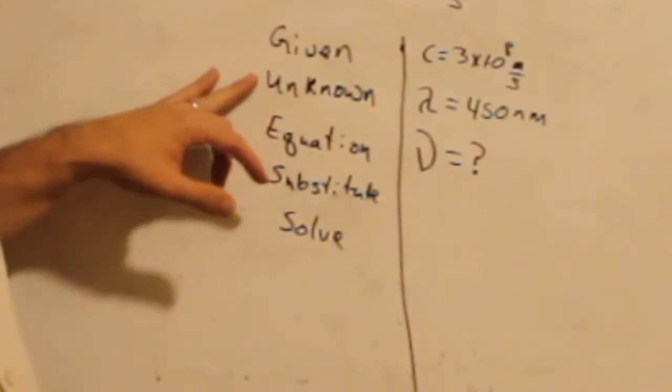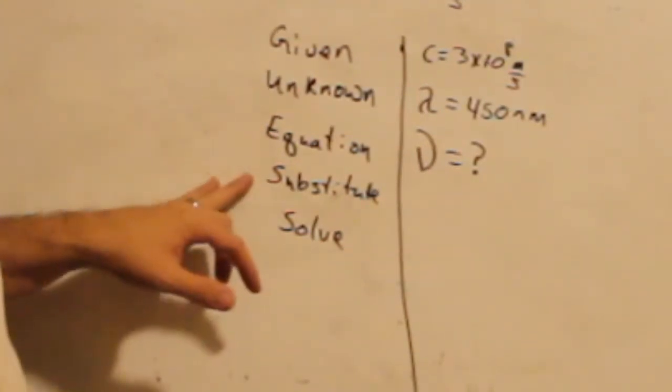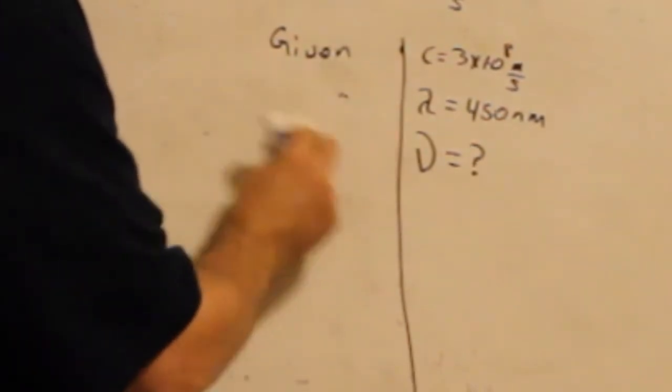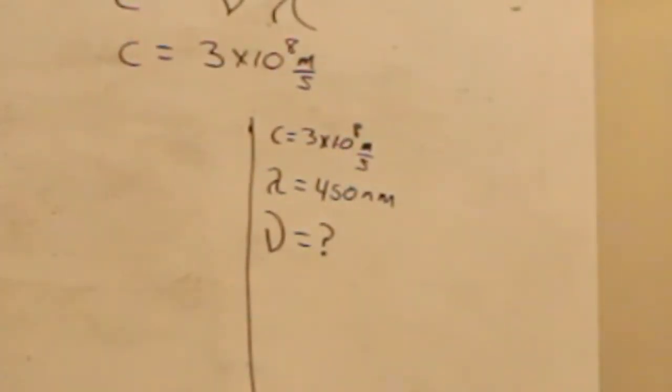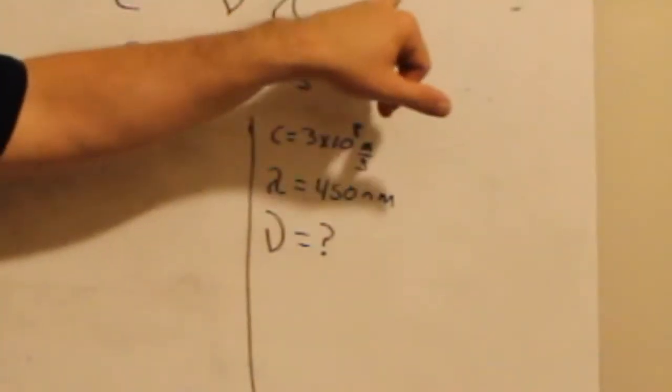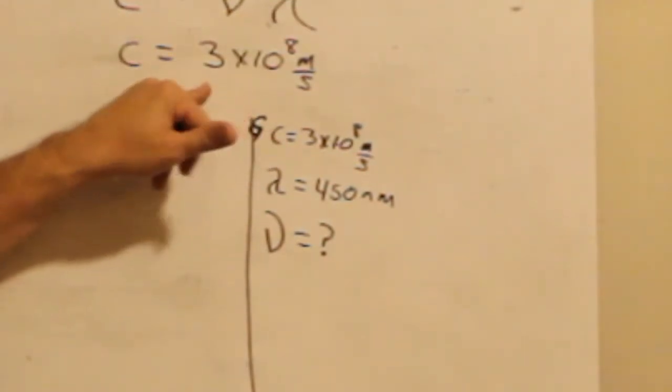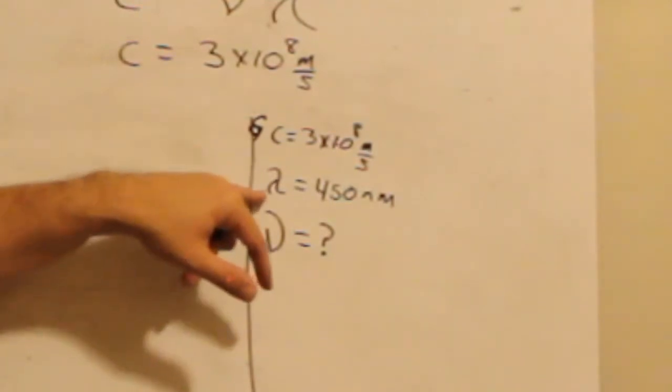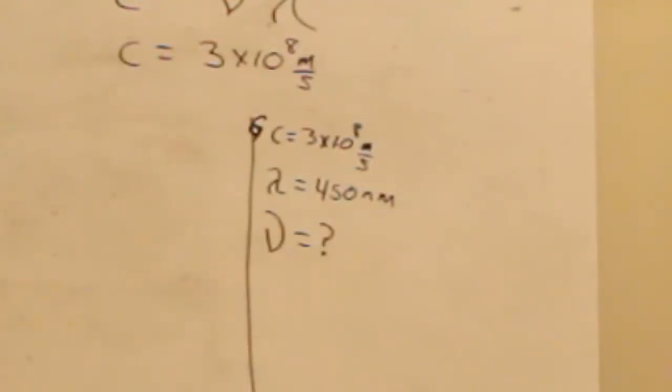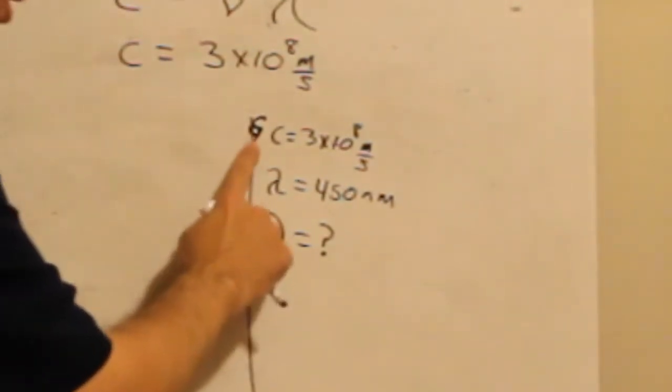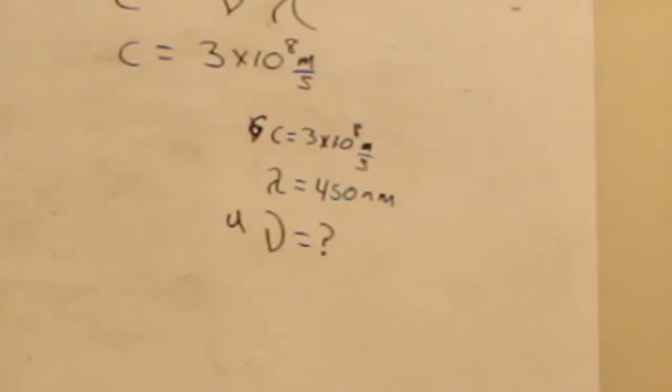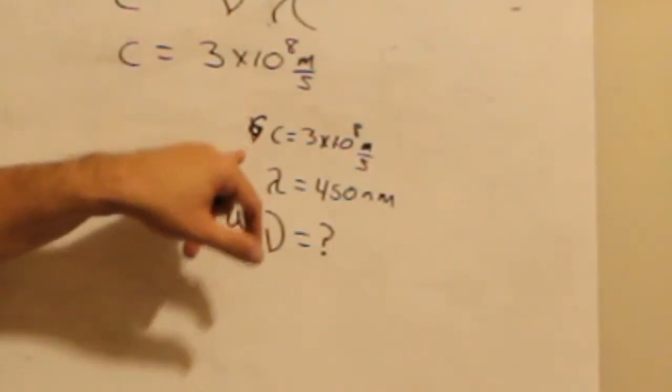So, first, we're going to use our process, which is given, unknown, equation, substitute, and solve. We're going to follow that same method. I'm going to go ahead and erase it, though, so I have room to write some things. This is my question: If you have a light with a wavelength of 450 nanometers, what is its frequency? So, the first thing I'm going to do is write my givens.